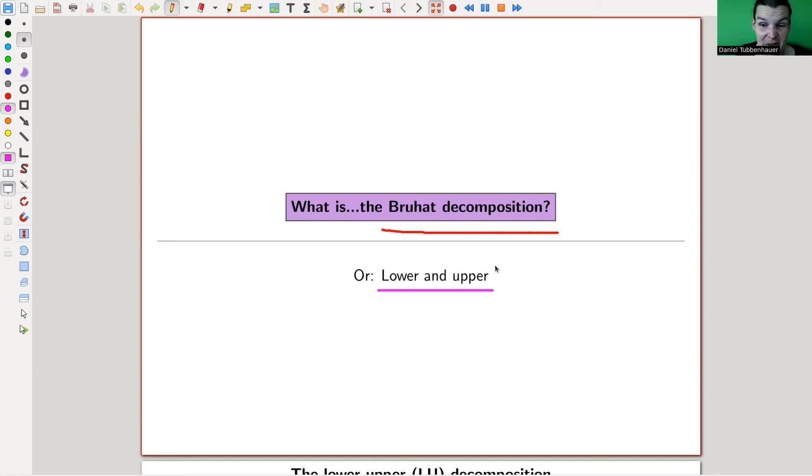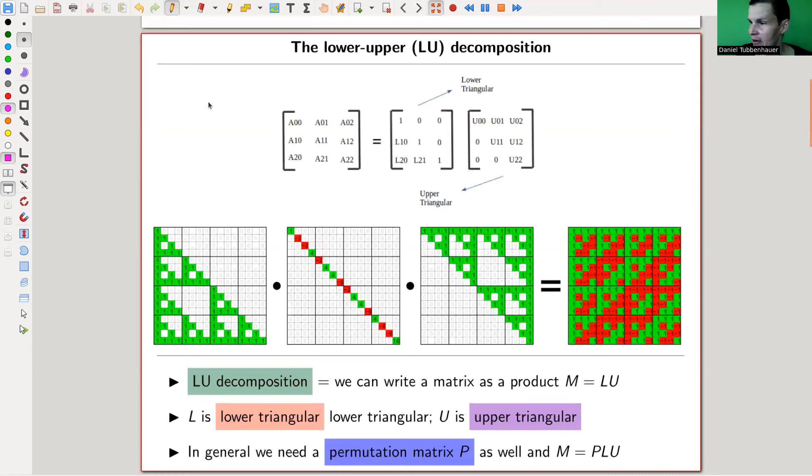So the only thing we need to know essentially today are matrices, my favorite topic of all time. So let's jump into matrices. If you do a matrix, then there is a famous decomposition of the matrix into a lower triangular matrix and an upper triangular matrix.